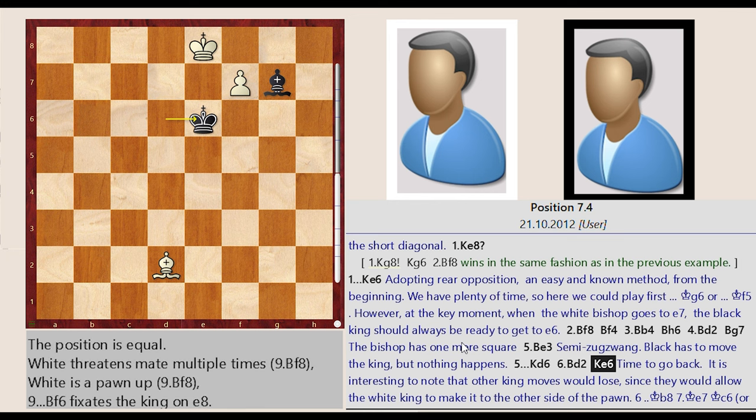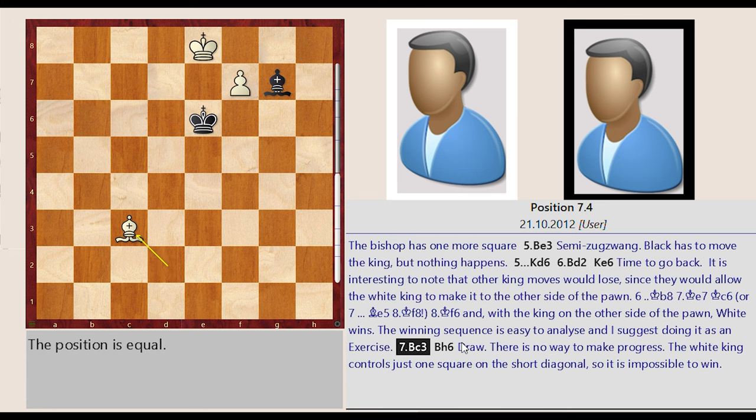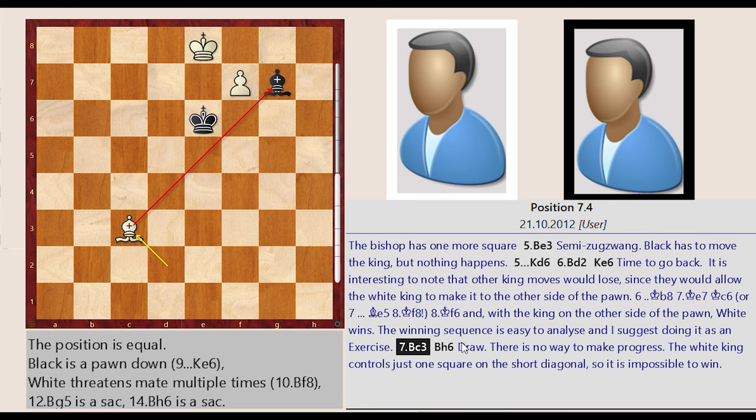Time to go back. It is interesting to note that other king moves would lose, since they would allow the White king to make it to the other side of the pawn. 6 cent B8, 7 cent E7 cent C6, or 7 yen E5, 8 cent F8.